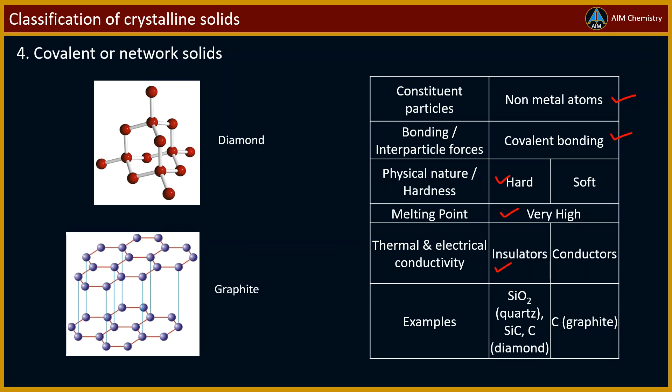Some examples of these solids are quartz, silicon carbide, diamond, etc. Graphite is also belongs to this class, but it is soft and conducts electricity.